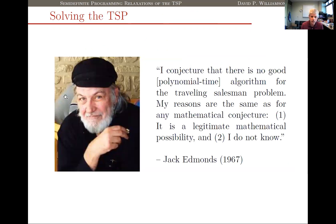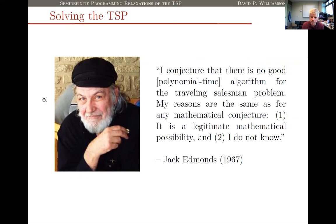Over 50 years ago, Jack Edmonds — another famous Waterloo faculty member — in a very famous paper conjectured that there is no good, what today we would call polynomial-time, algorithm for the traveling salesman problem. He said: 'My reasons are the same as for any mathematical conjecture — one, it is a legitimate mathematical possibility, and two, I do not know.' Both statements continue to be true: it's a legitimate mathematical possibility and we still don't know the answer.